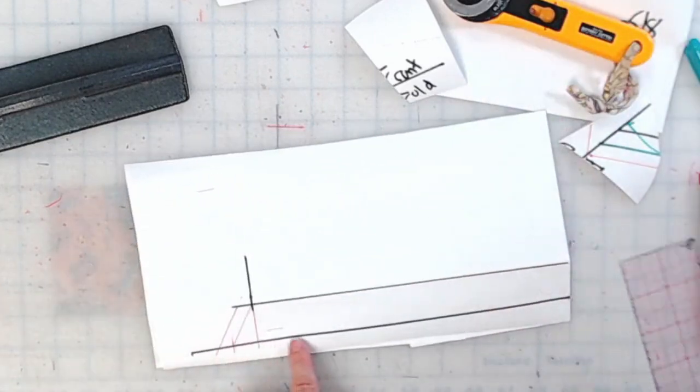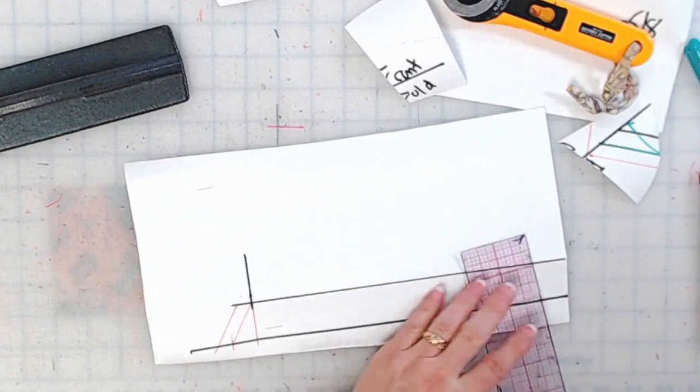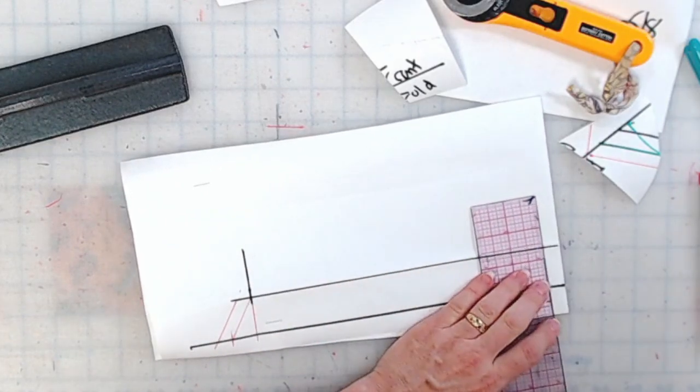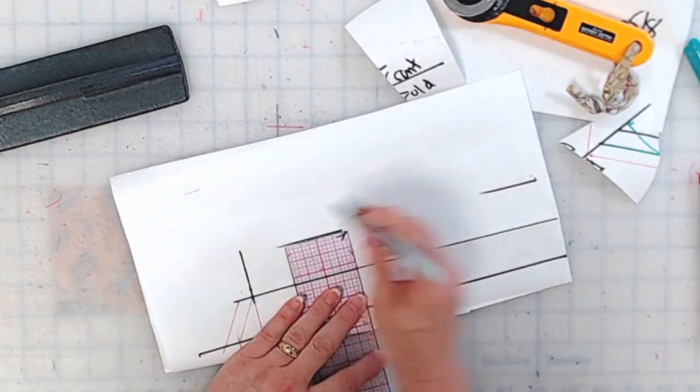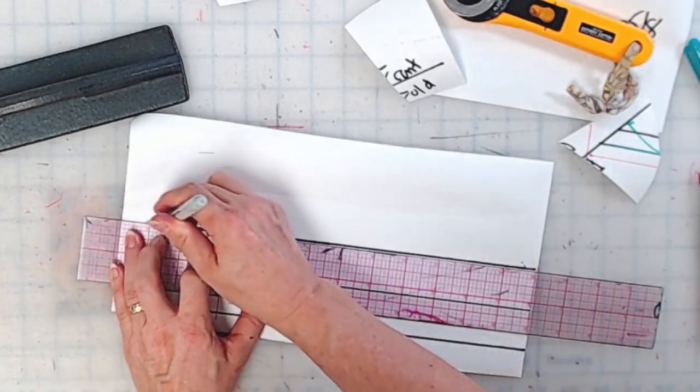So we're going to draw this width on the other side. So this exact same width, draw a parallel line on the other side. Just like that.